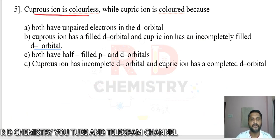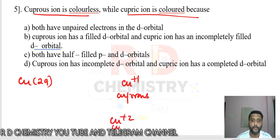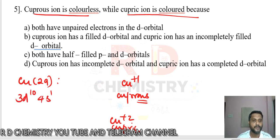Question number 5: cuprous ion is colorless and cupric ion is colored. Copper has atomic number 29. Cu⁺ is called cuprous and Cu²⁺ is called cupric (lower valency: -ous; higher valency: -ic). Copper's electronic configuration is 3D10 4S1 (exceptional). For Cu⁺: 3D10 4S0. For Cu²⁺: 3D9 4S0.